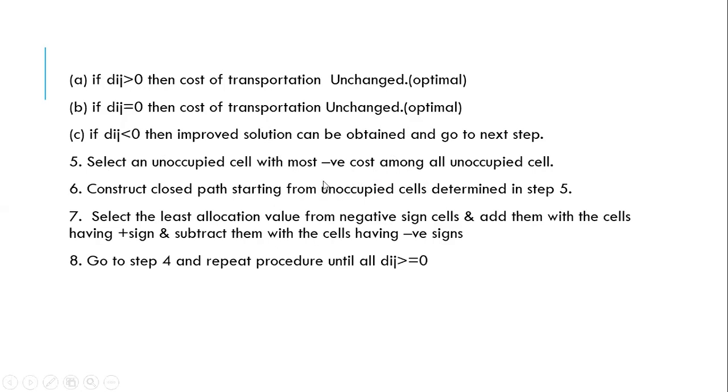So once we have chosen the most negative value we have to construct a loop. We have to construct a closed path starting from that unallocated cell which was computed in step 5.